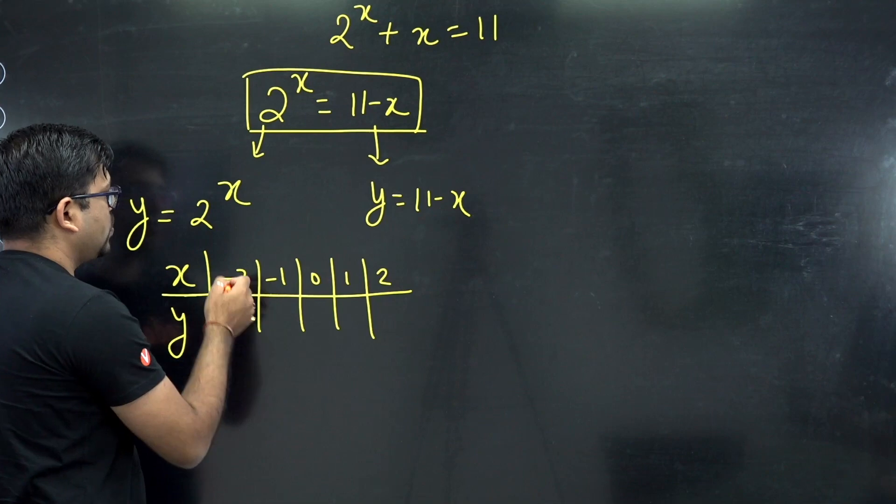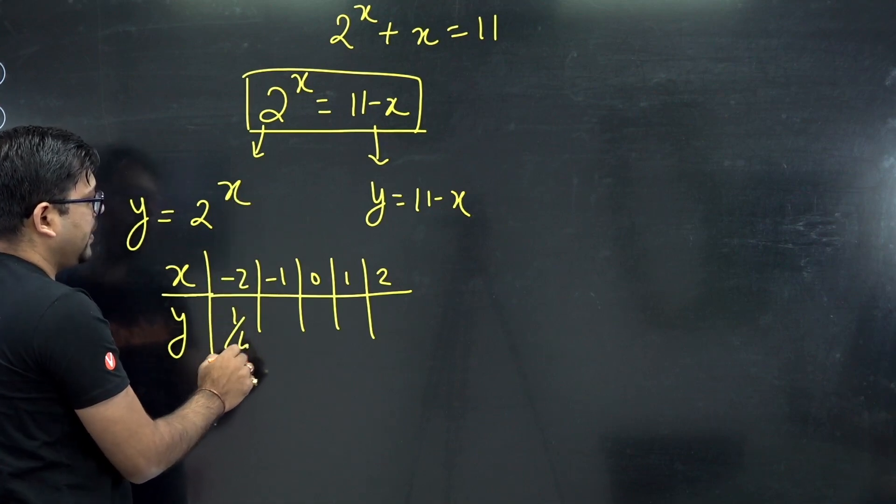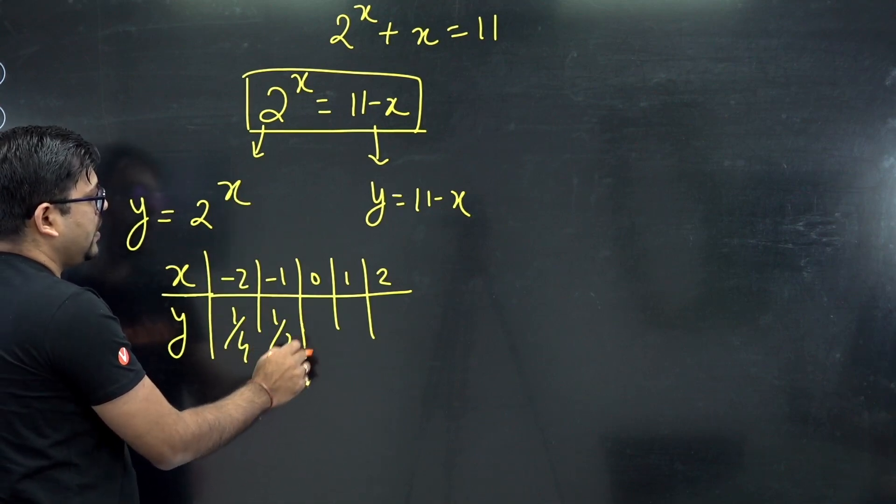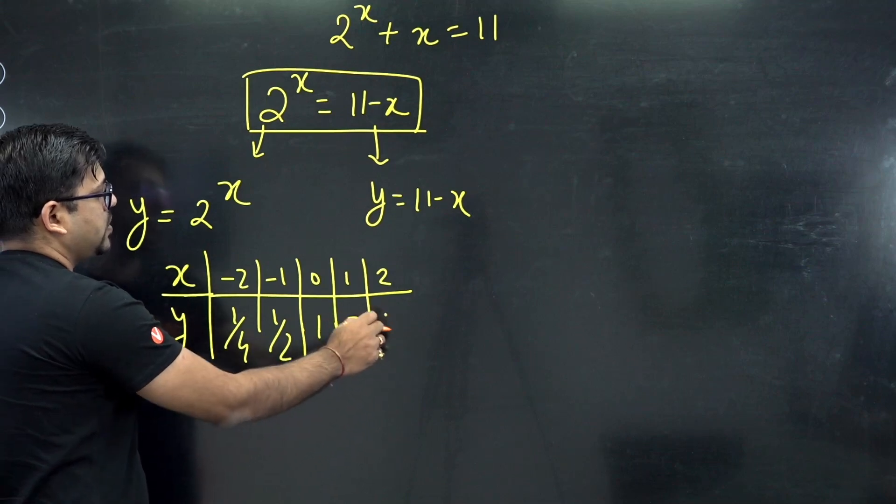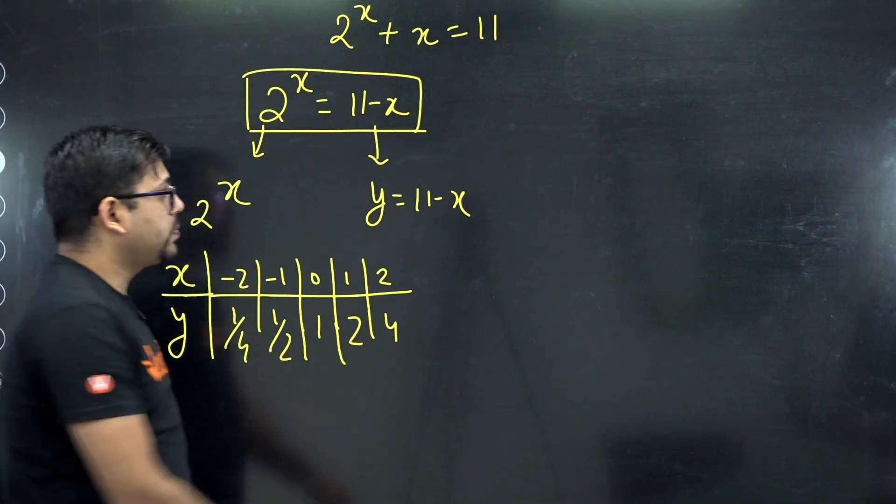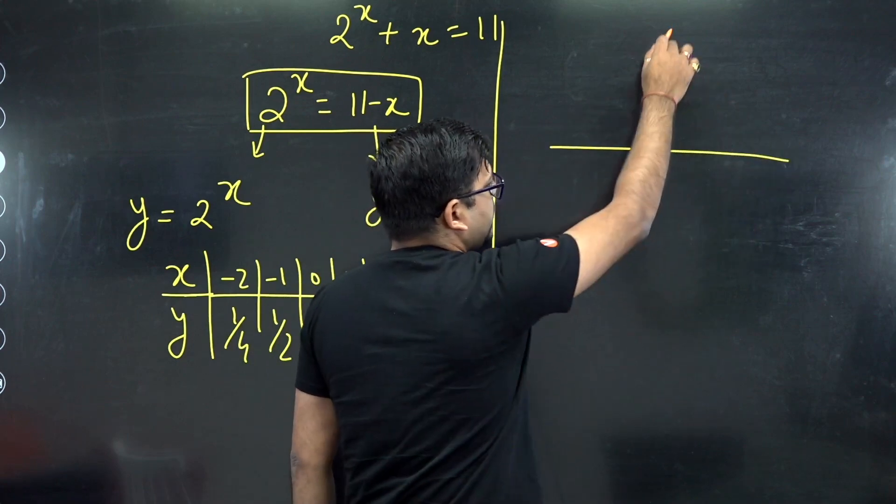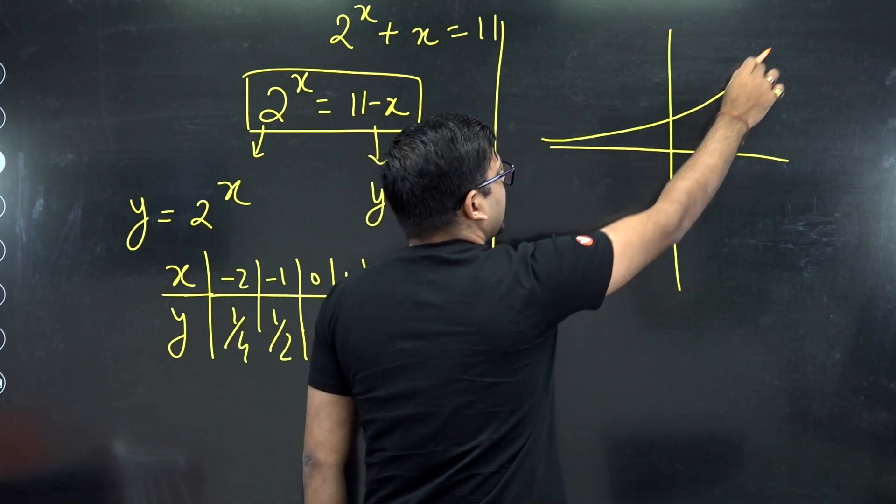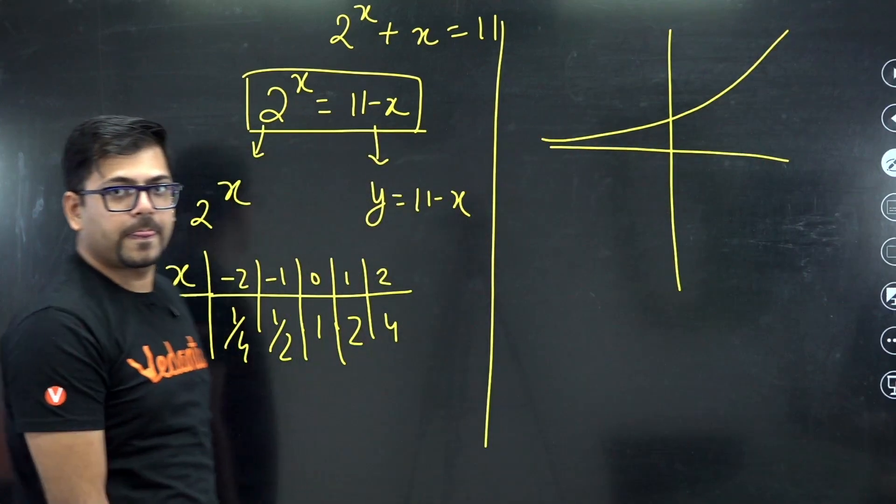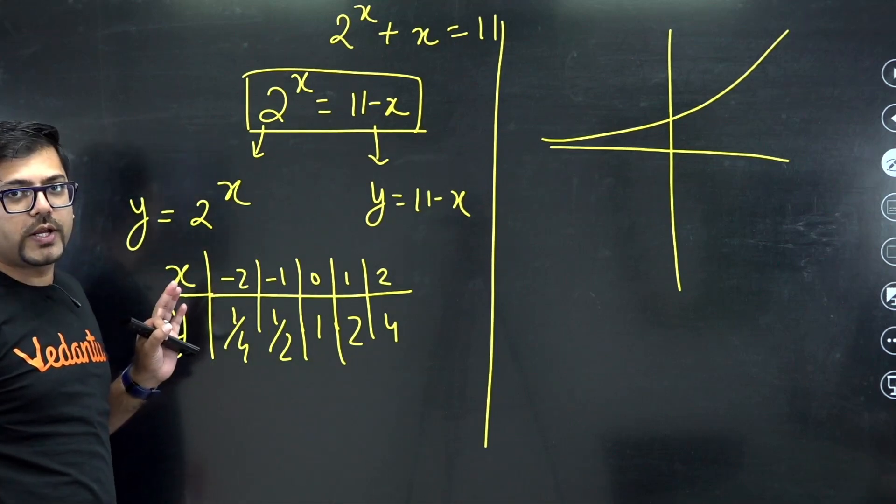So you will get certain values. For minus 2 you will get 1 by 4, minus 1 gives 1 by 2, this is 1, and for 1 this is 2, and this is 4. If you plot all these points, the graph will be looking like this. So you have this x axis, y axis, the graph will be looking like this. This is going to be 2 raised to power x.